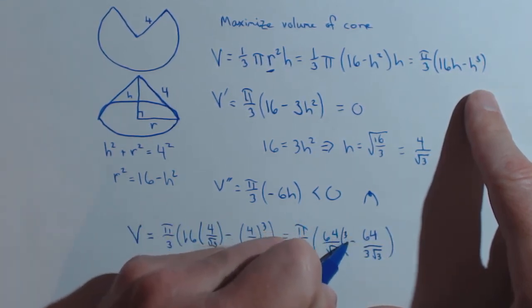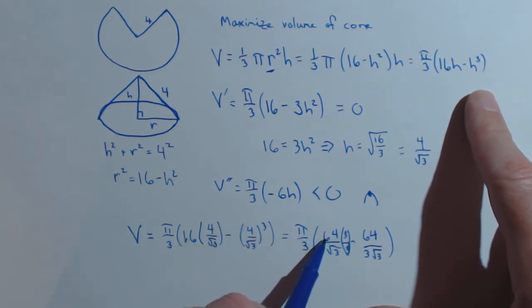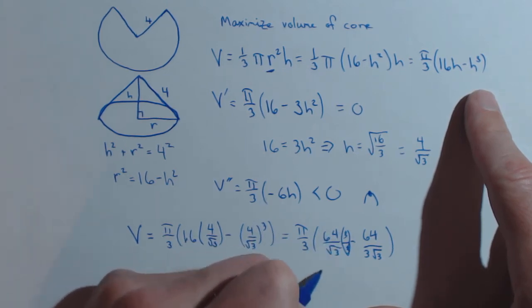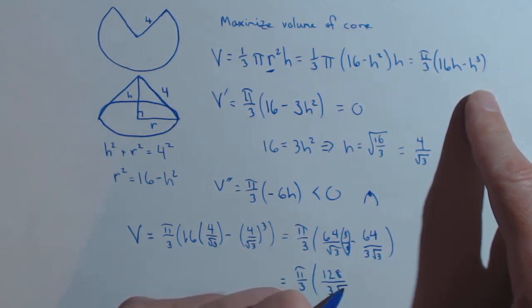So if we give these a common denominator of 3 rad 3, 3 times 64 is 192. So what we're going to get is pi over 3 times 128 over 3 rad 3.